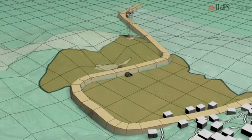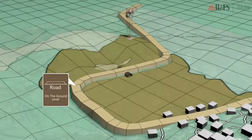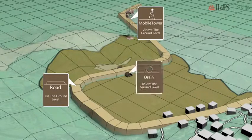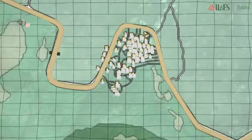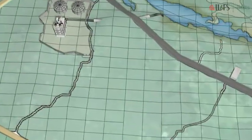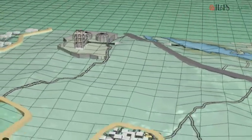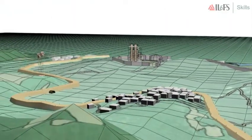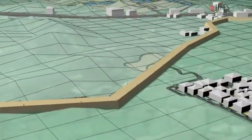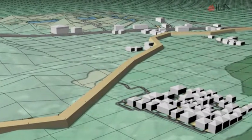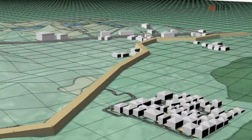There are some objects on, above and below Vijay's piece of land. Now take a look in and around. You can see many natural and man-made things on the earth's surface.